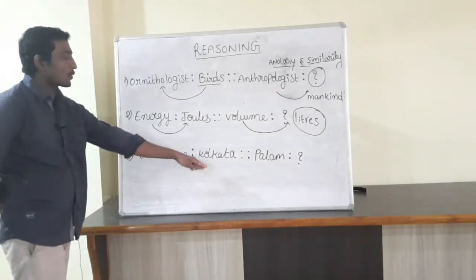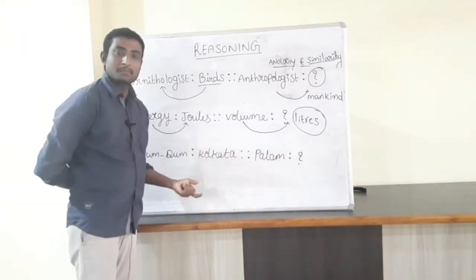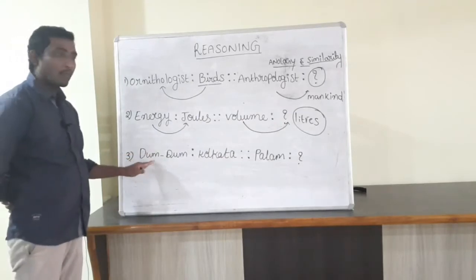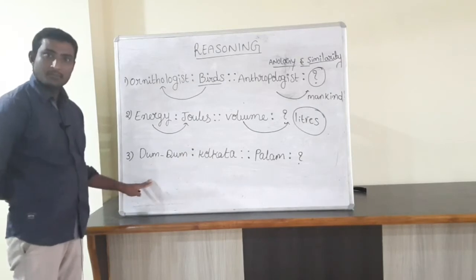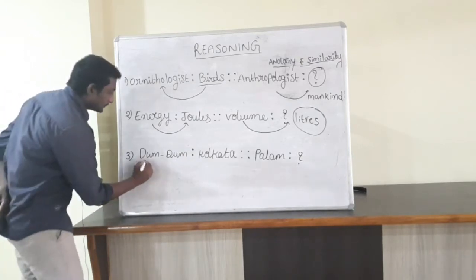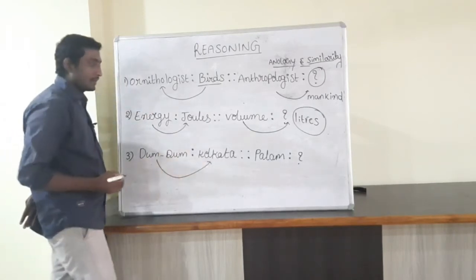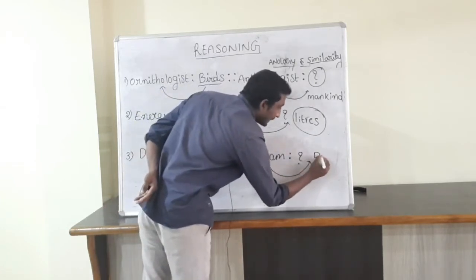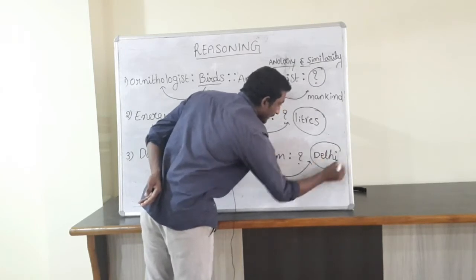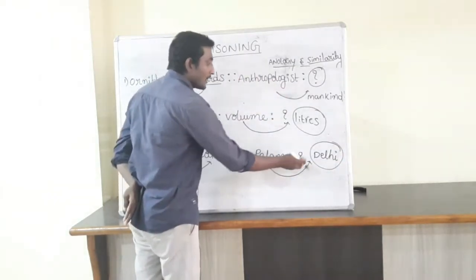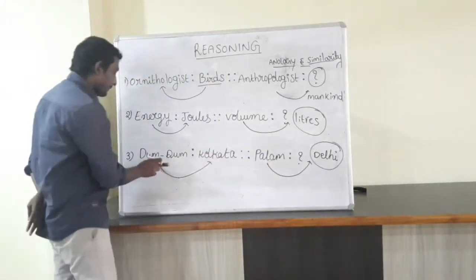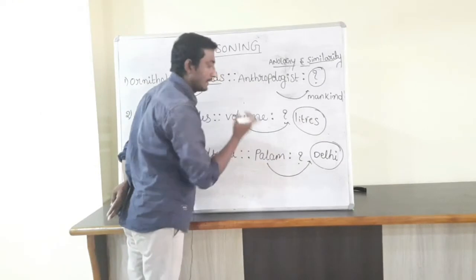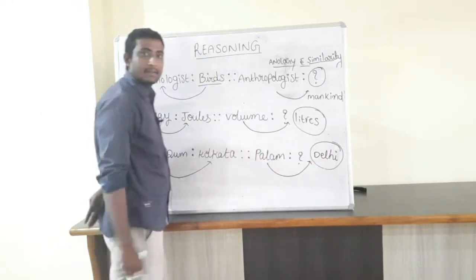Dum-dum is to Kolkata, Palam is to what? Dum-dum is the name of one of the airports in Kolkata. Same like that, Palam is the name of one of the airports in Delhi. So the answer is Delhi.